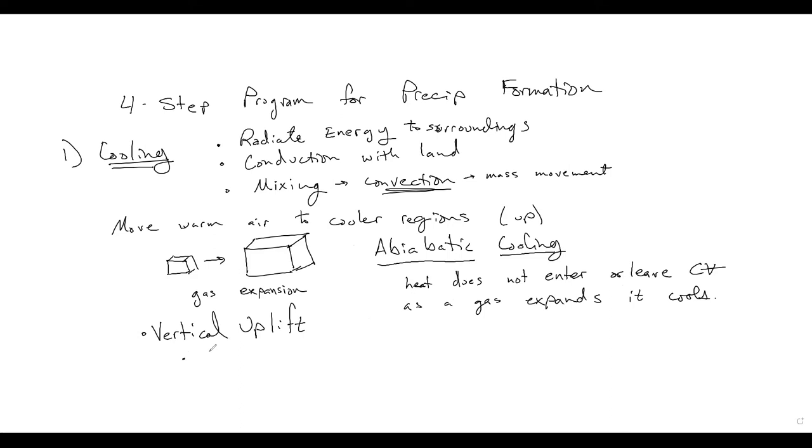And this is called adiabatic cooling. This is the really important process, thermodynamic process. So if we think of this as a closed system, so heat does not enter or leave the control volume. The gas just expands and it expands because it's going in elevation. So we have less pressure on that. And as it expands, it cools. This is a fundamental principle behind air conditioning or one of them. So the adiabatic process and vertical uplift obviously is the primary mechanism of expansion of our air. Vertical uplift could come from convection. It could come from orographic, meaning mountains. And we could also get it from frontal systems. So warm air over cool air or vice versa.